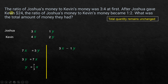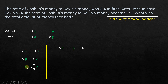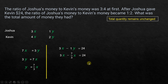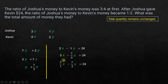The difference between Joshua's initial amount (3x) and final amount (1y) should equal $24, since he gave away $24. So 3x minus 1y equals 24. Now we substitute y = (7/3)x: 3x minus (7/3)x equals 24. Writing 3x as (3/1)x, we need a common denominator. The LCM of 3 and 1 is 3, so we rewrite 3x as (9/3)x.